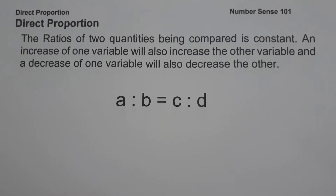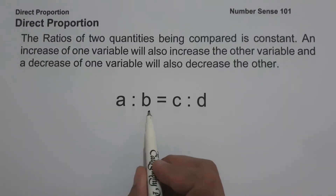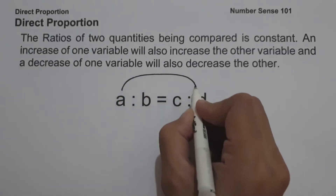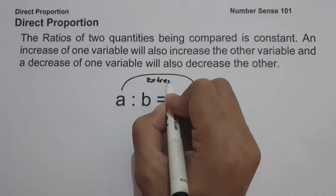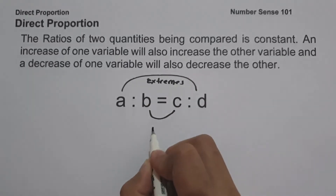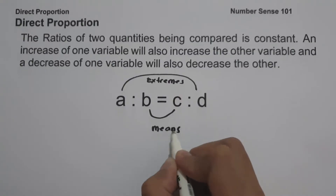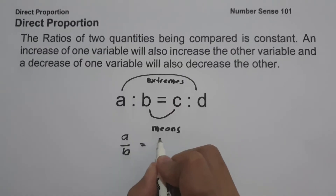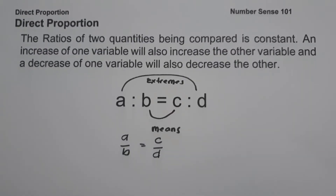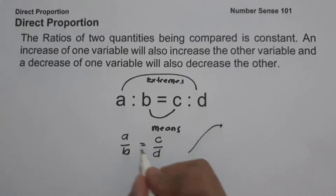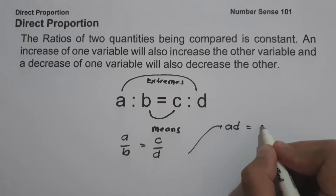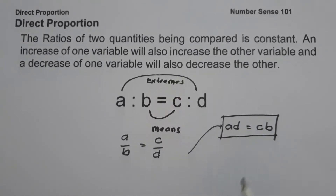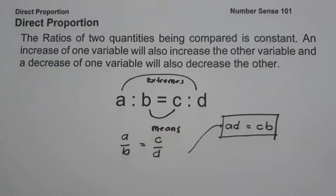Direct proportion is written in the form of A is to B such that C is to D. The outer term is what we call extremes. The inner term is what we call means. And we can write this one as A over B equals C over D. And if you are going to simplify, you are going to have A times D equals C times B. And these are the basic concepts that you need to remember in order for us to understand what is direct proportion.